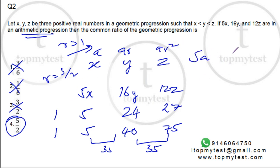So 5a, 16ar, and 12ar square. They are in arithmetic progression.